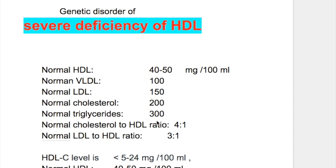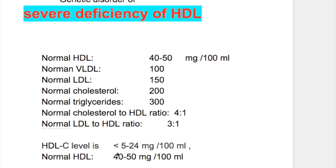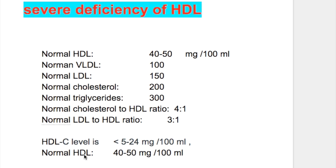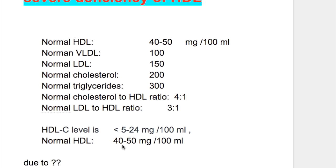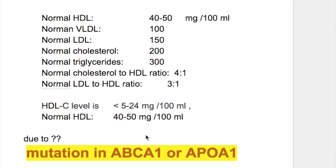The HDL level varies from 5 to 24 mg per 100 ml in Tangier's disease, and in severe cases may be less than 5 mg per 100 ml. The normal level of HDL varies from 40 to 50 mg per 100 ml.